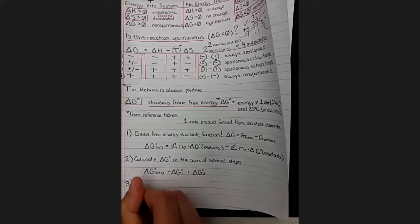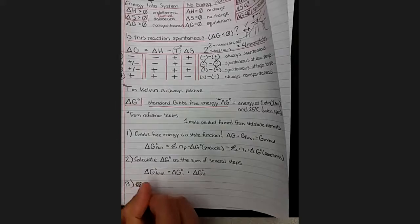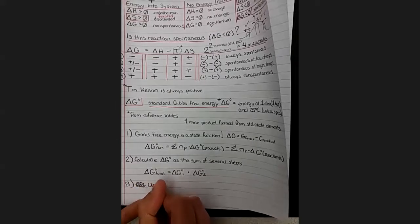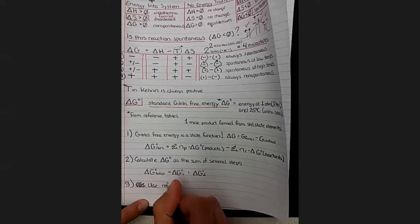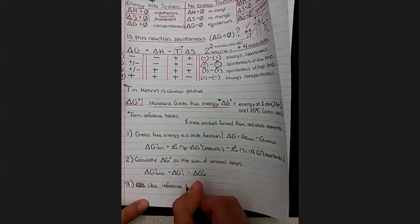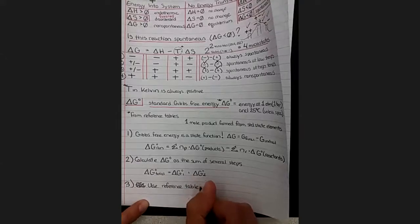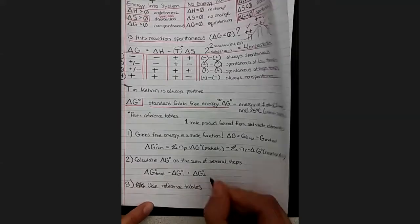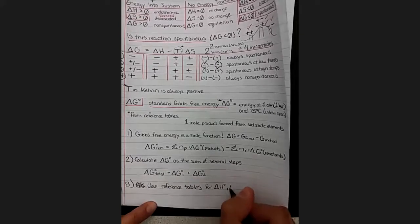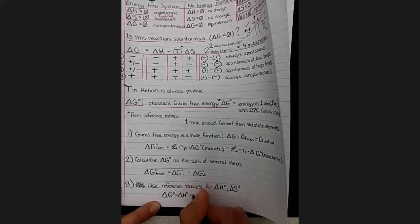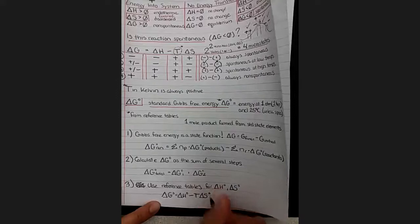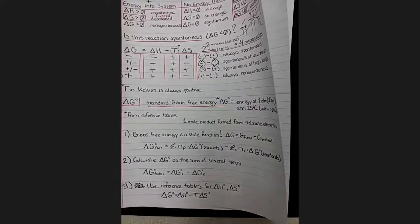And our third method, which is a unique one, is we can use reference tables to look up those standard values for enthalpy and for entropy, and then we can use our favorite formula: Guppies hate tartar sauce. And we can solve for change in Gibbs free energy.